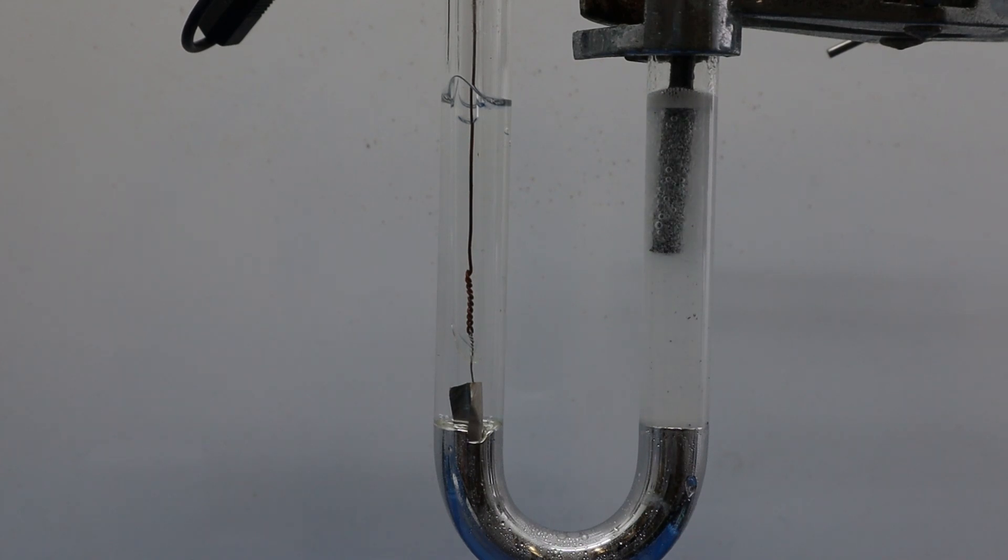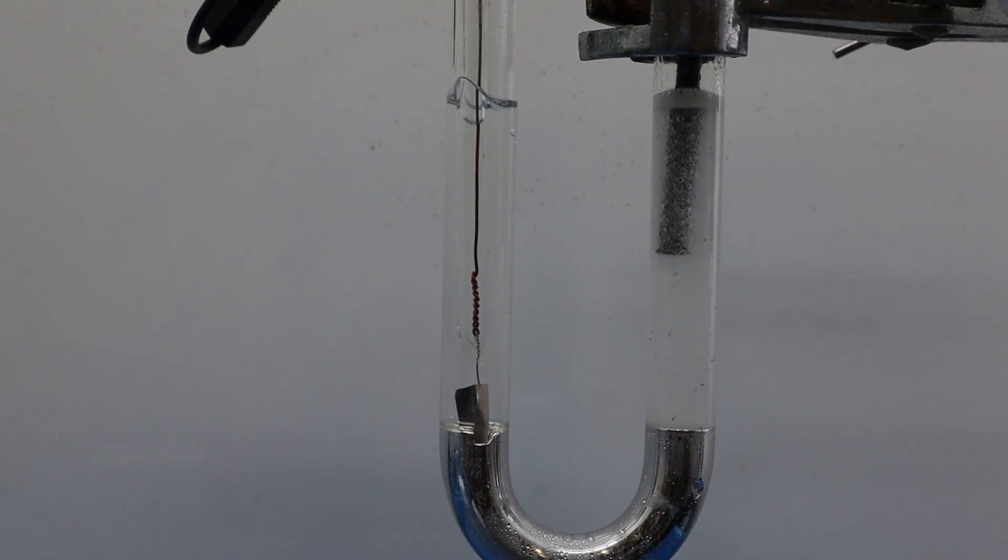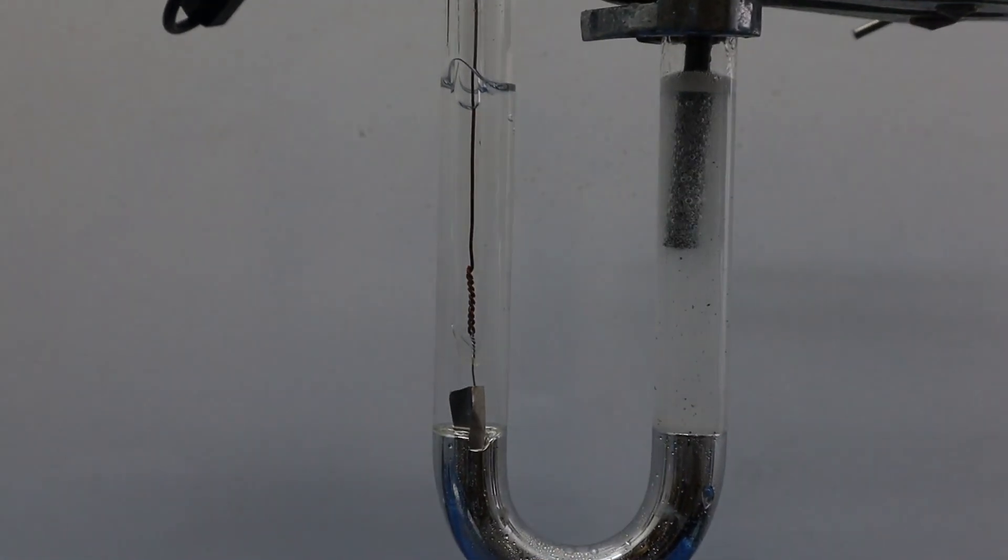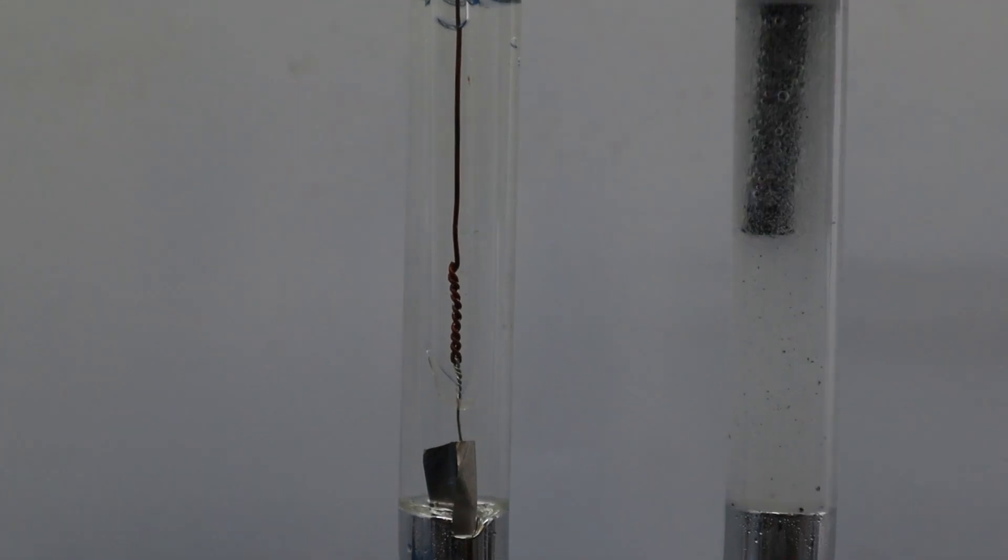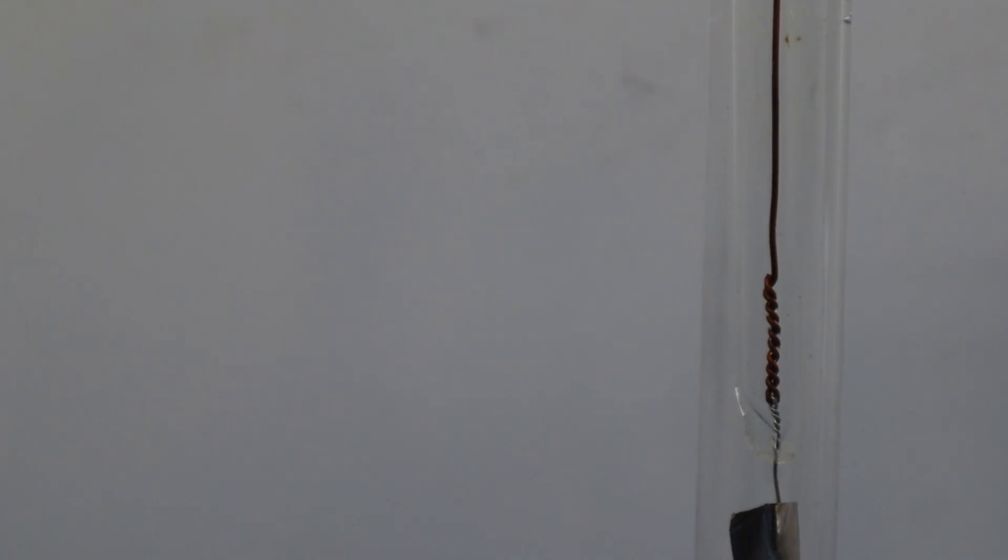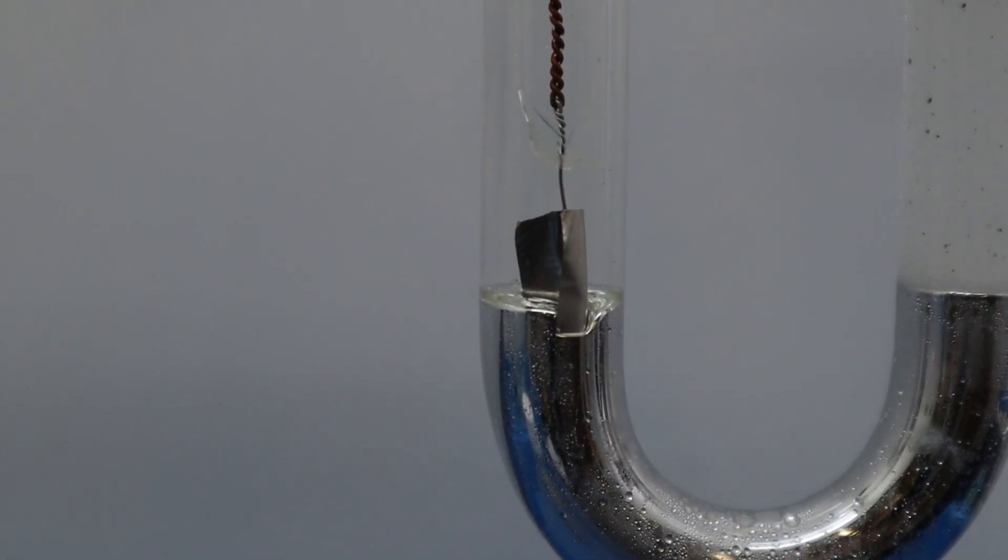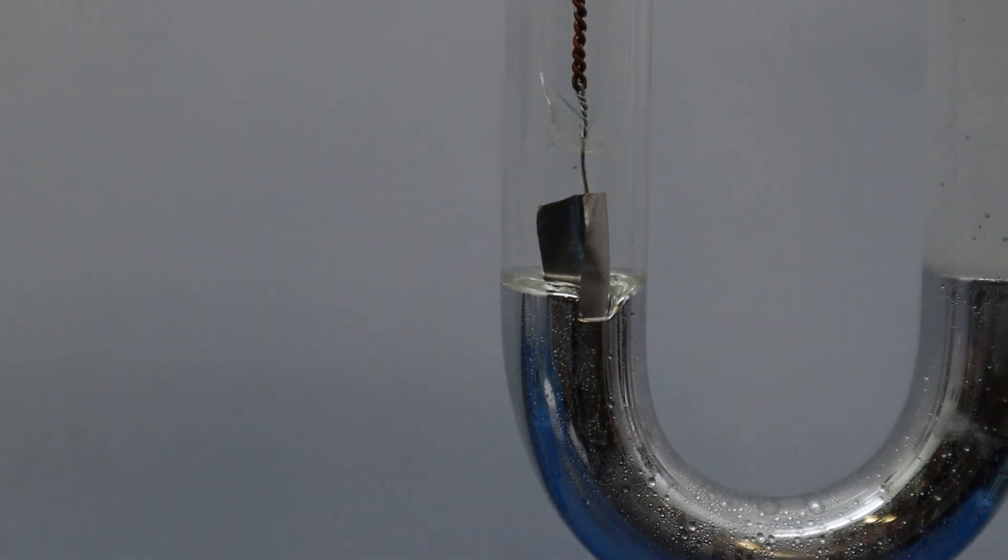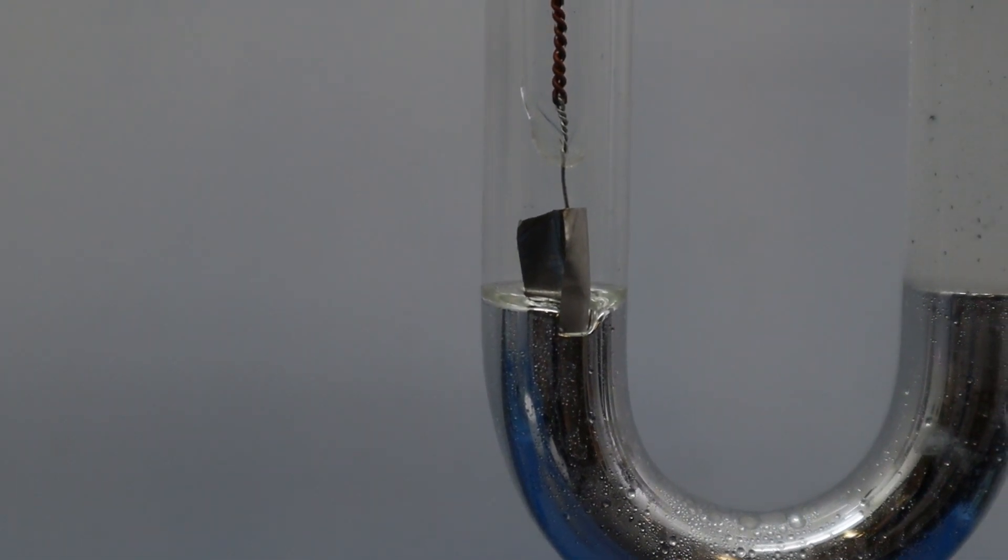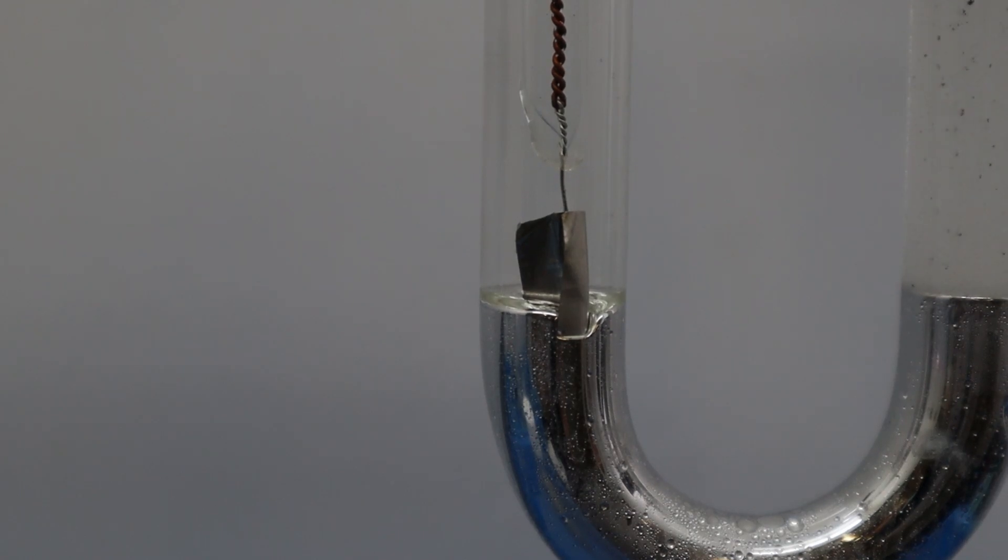As you know, sodium ions are discharged at the cathode and form sodium amalgam. When sodium contacts with the deionized water, it is expected that sodium reacts with water to form sodium hydroxide and hydrogen gas. In the past, I expected that the hydrogen gas bubbles will rise from the surface of mercury to the water. However, no such results occurred.